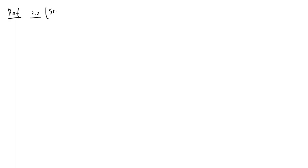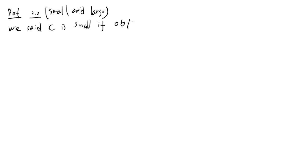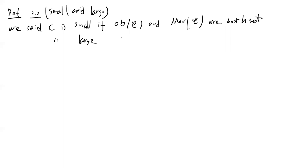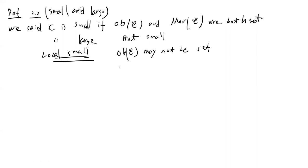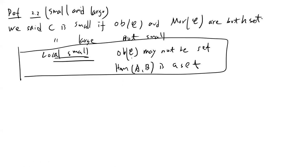Definition 2.2: the terminology of small and large. We say a category C is small if both the objects of C and the morphisms of C — the total collection of all morphisms — are both sets. If C is large, it means it is not small. There is also a terminology called locally small, which means the objects of C may not form a set, but for each two objects A and B, Hom(A, B) is a set. This is the usual case.